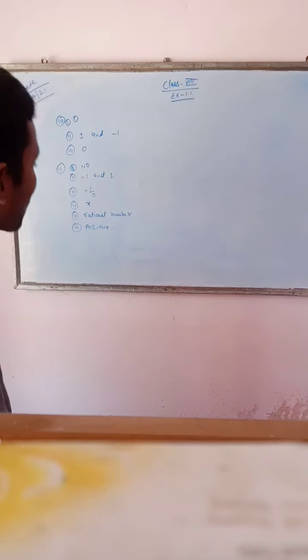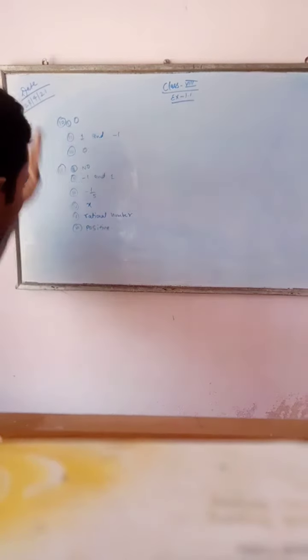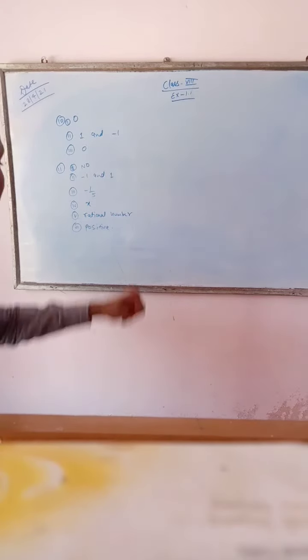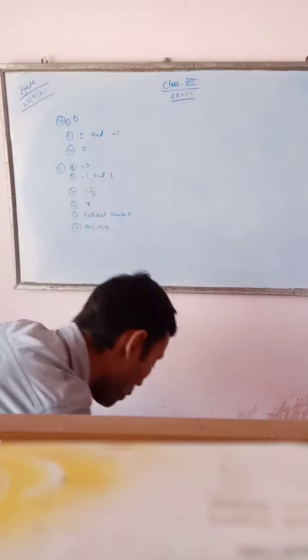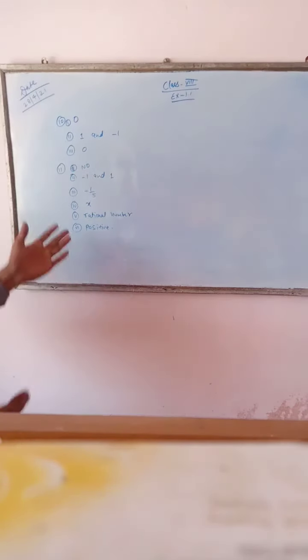The reciprocal of minus 5 is 1 over minus 5. The reciprocal of 1 over x is x. The product of two rational numbers is always a rational number. The reciprocal of a positive rational number is positive.